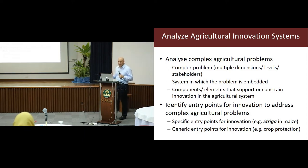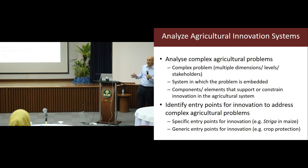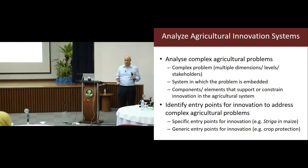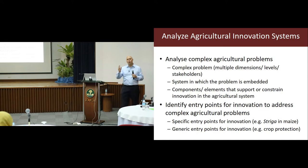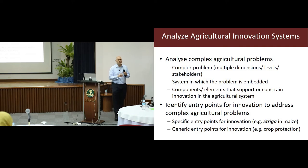Part of that is looking at identifying the right entry points for innovation to address complex problems. For example, you would not go in and say 'I want to tackle problems in agriculture in general.' You would go in and say 'I want to trial how I can remove Striga weeds in maize' or 'how can I look at crop protection?' — looking at specific points of entry in order to address that.